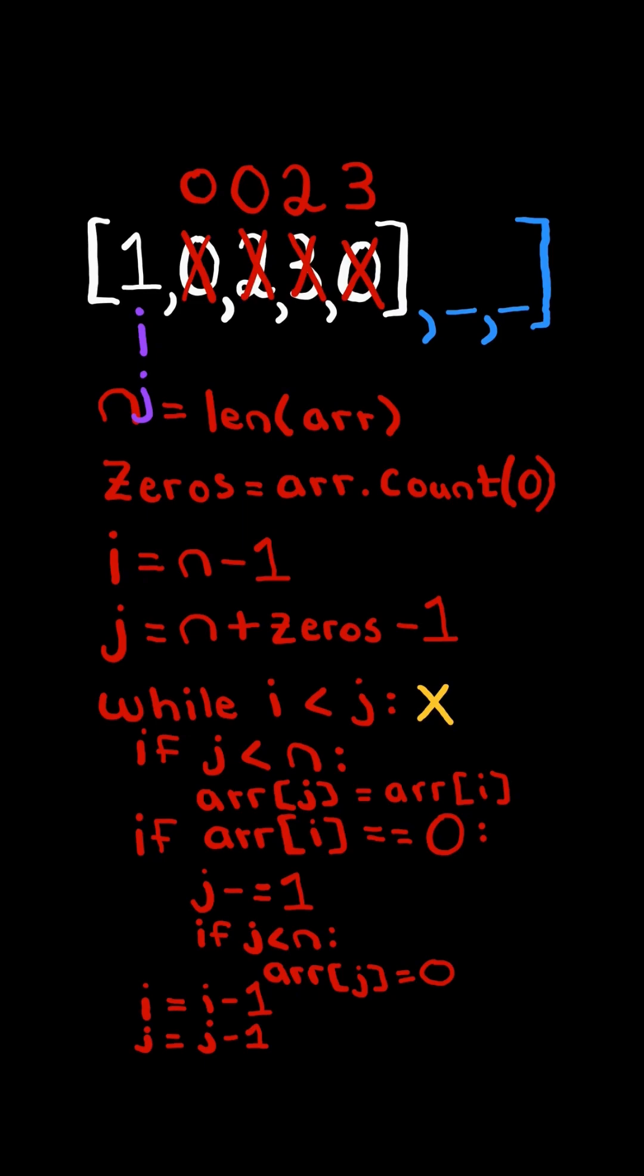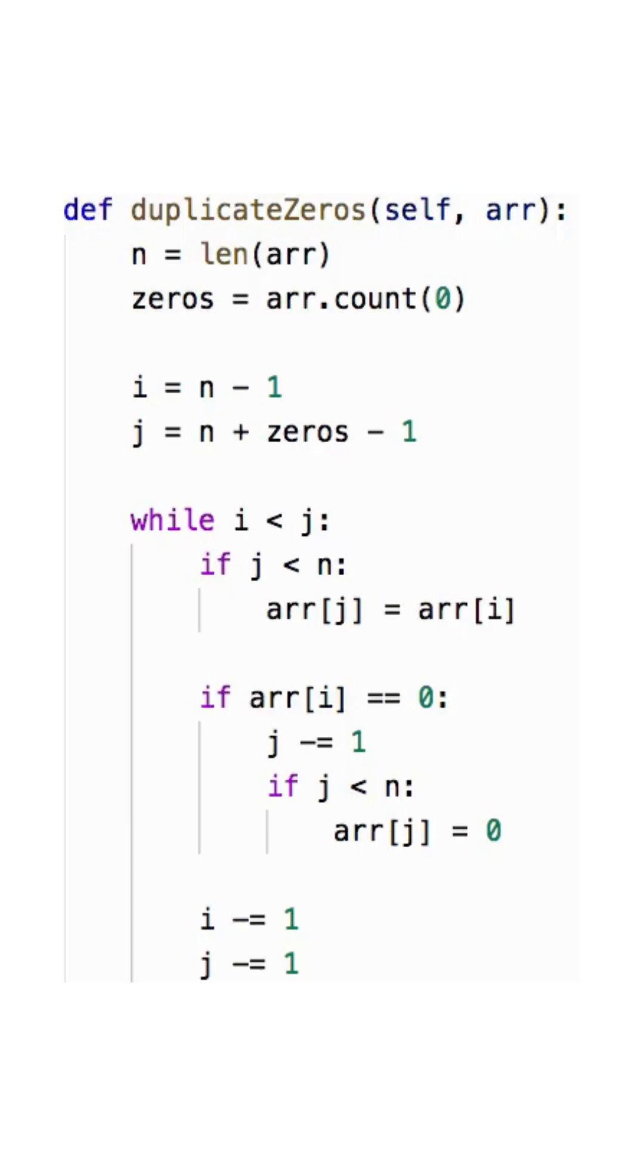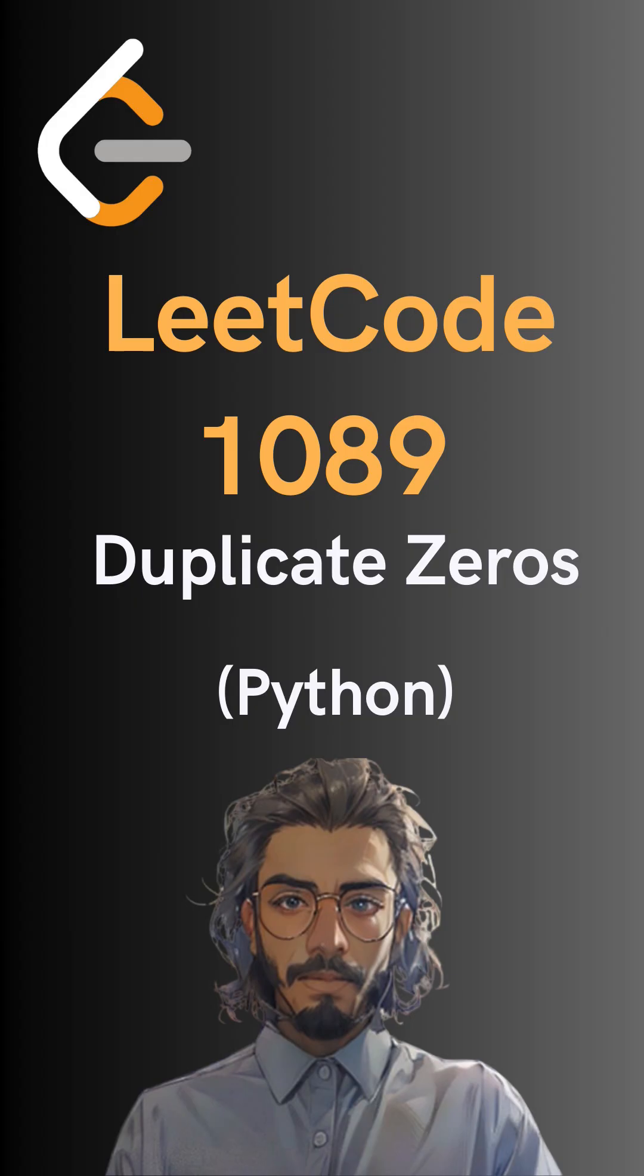And now, since i is no longer less than j, we stop the algorithm, and the input array will be correctly modified. And here's the code to do so, please like and follow for more.